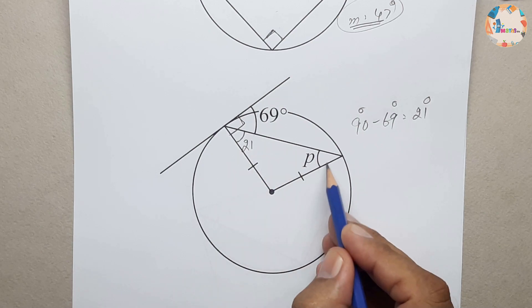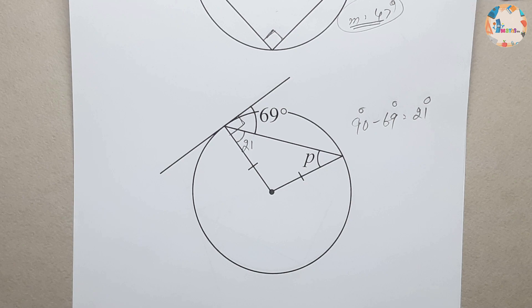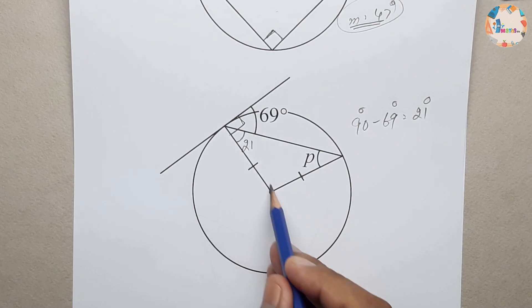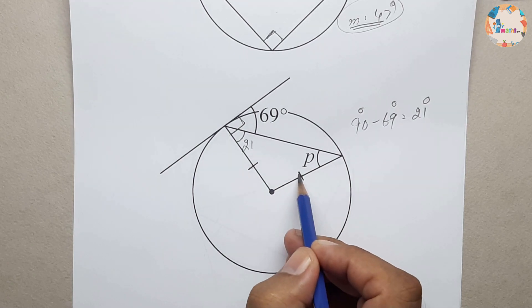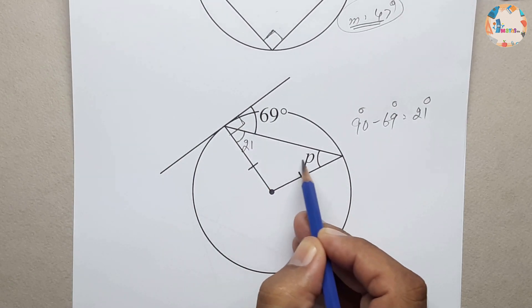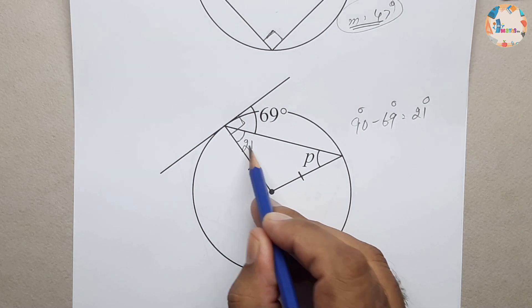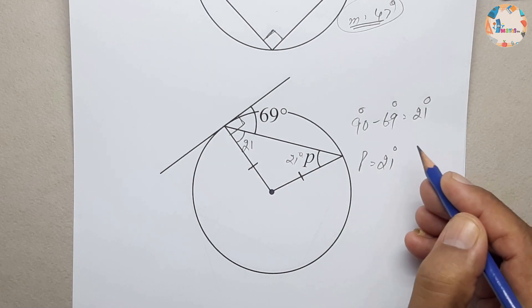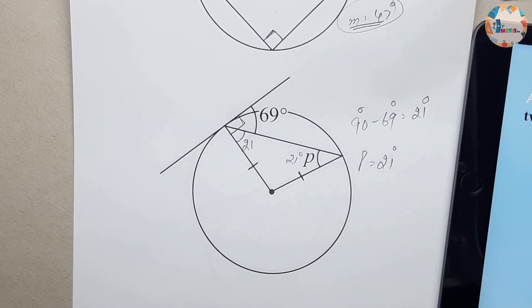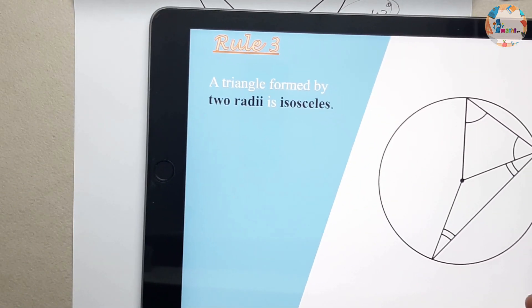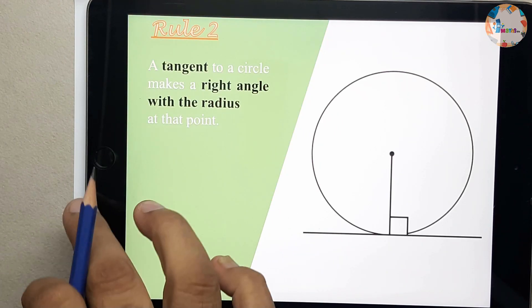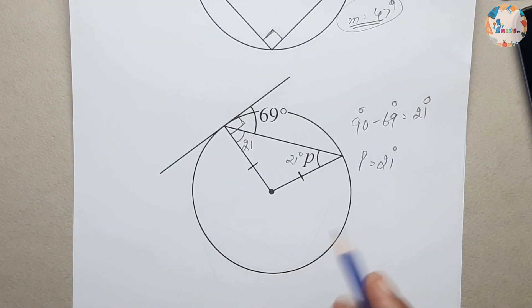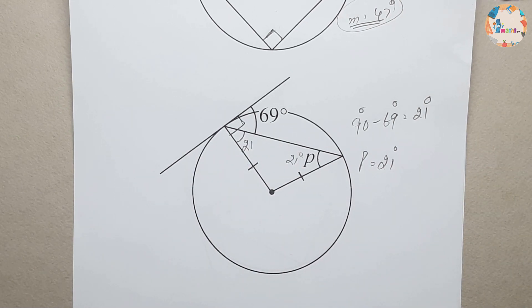For the next part we need to find angle P. This side is a radius and this side is also a radius, so by the rule the triangle formed by two radii is isosceles. The opposite angles are equal, so since this angle is 21 degrees, P is also equal to 21 degrees.